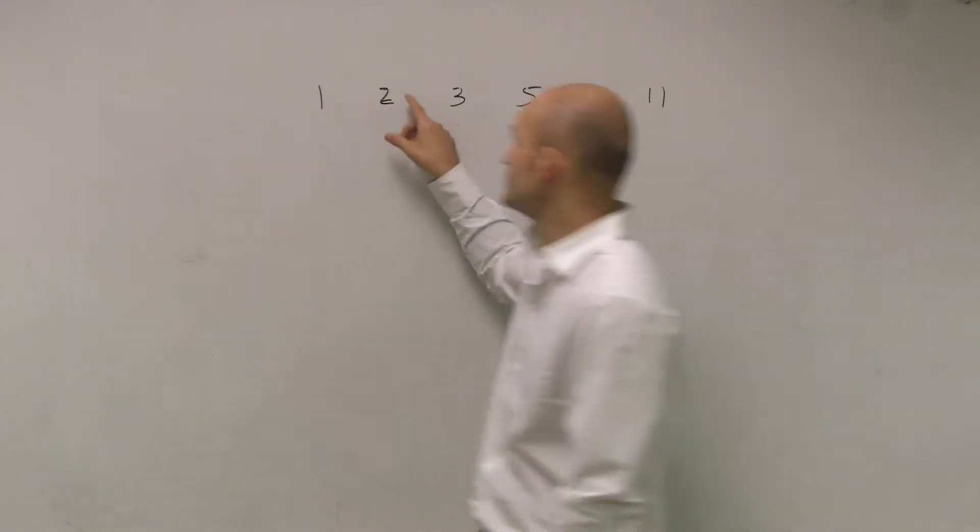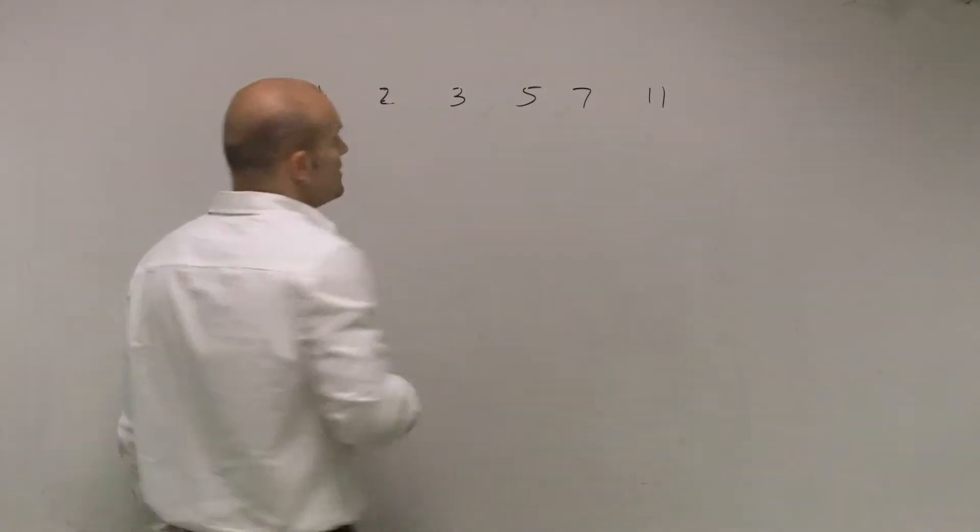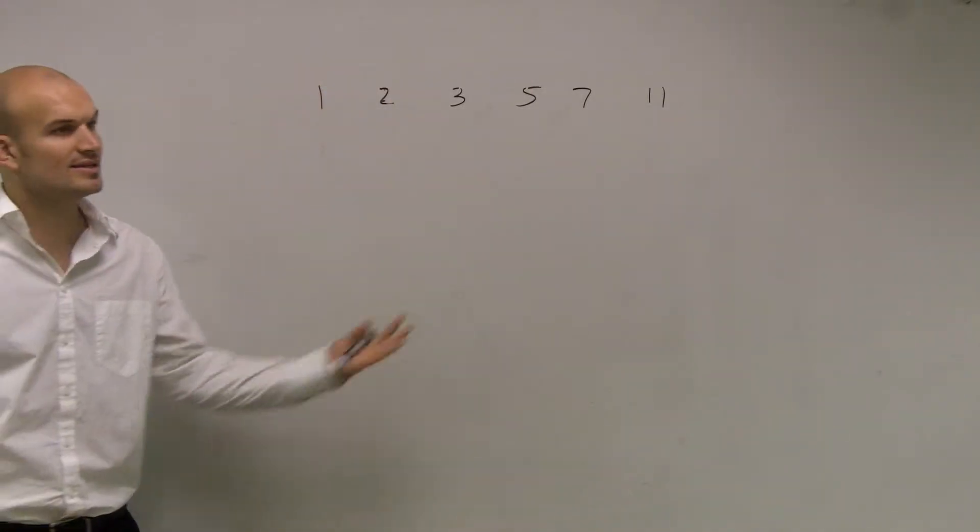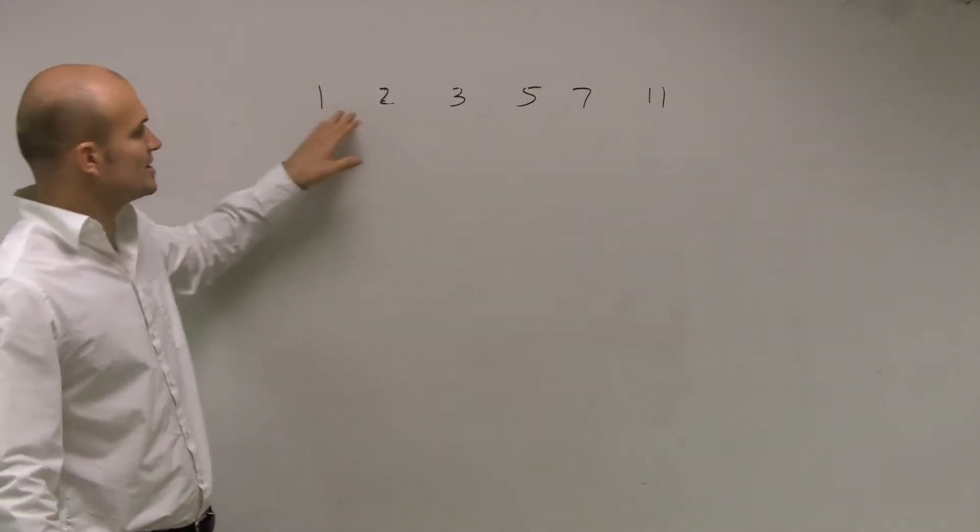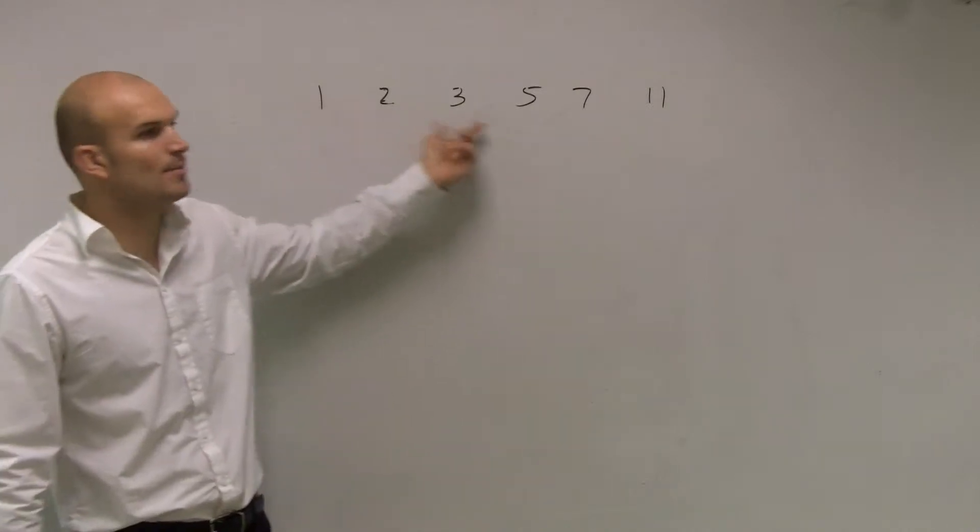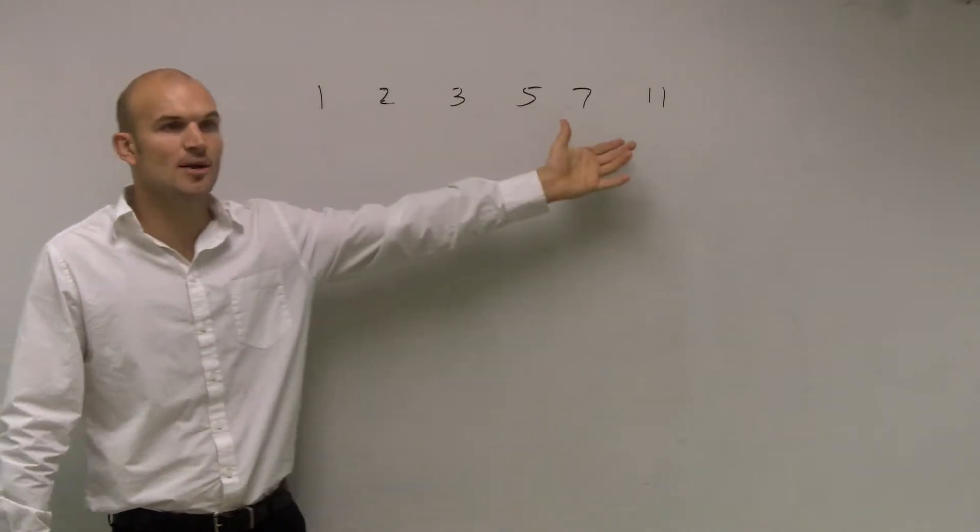So here is a list of the first six prime numbers. This is just an example that I want to show you. If you look at it, if you try to look for what other numbers you can divide into these numbers,